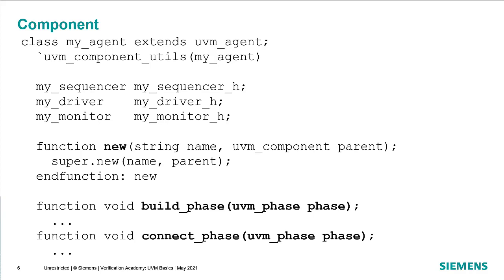Inside of the agent we have the constructor, which every component in UVM uses — a string name argument and a UVM component parent argument — and simply calls super.new. Then we have additional methods: build phase and connect phase. These are the ones that we use to actually instantiate sub-components in build phase and connect them in the connect phase.